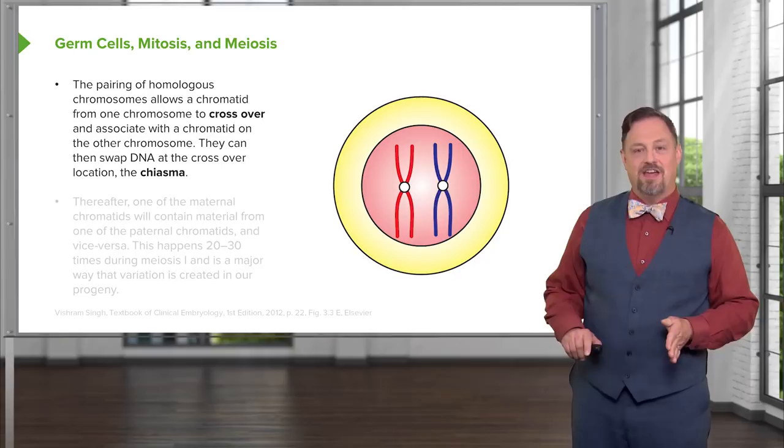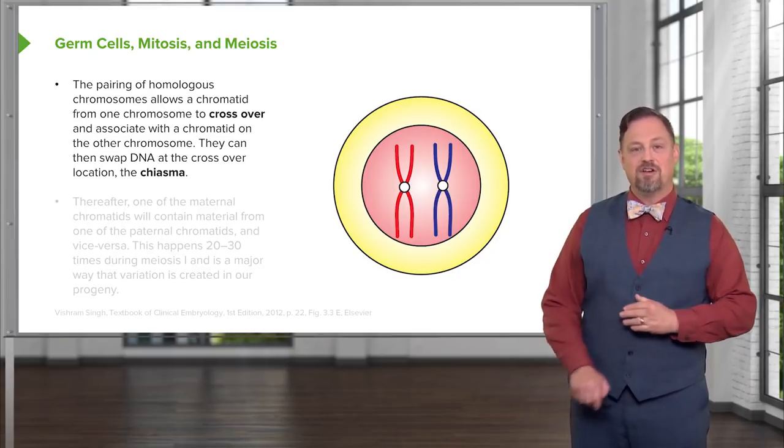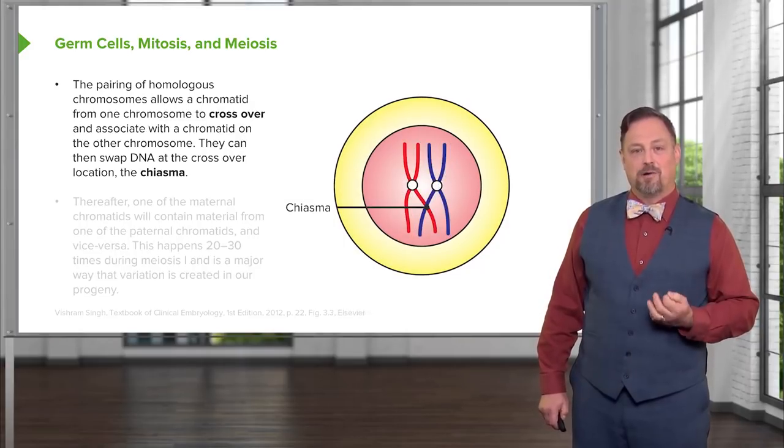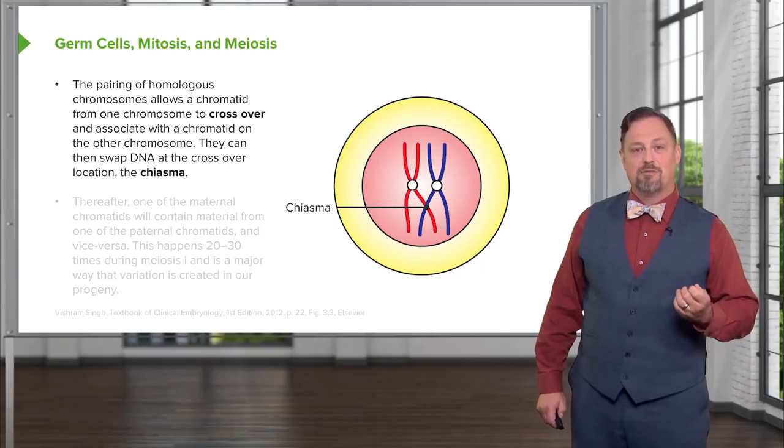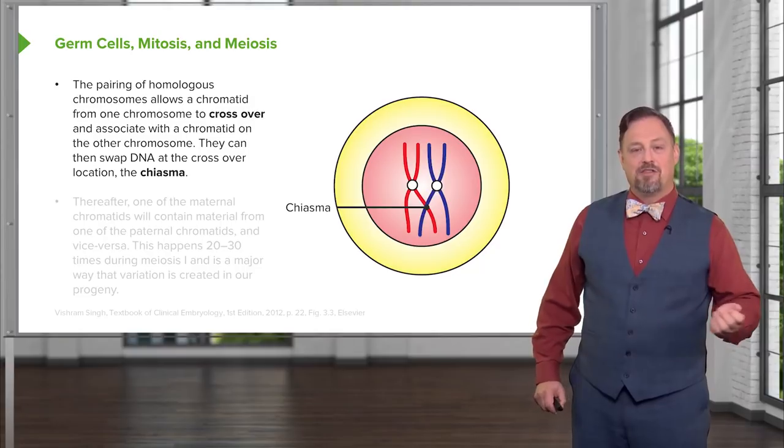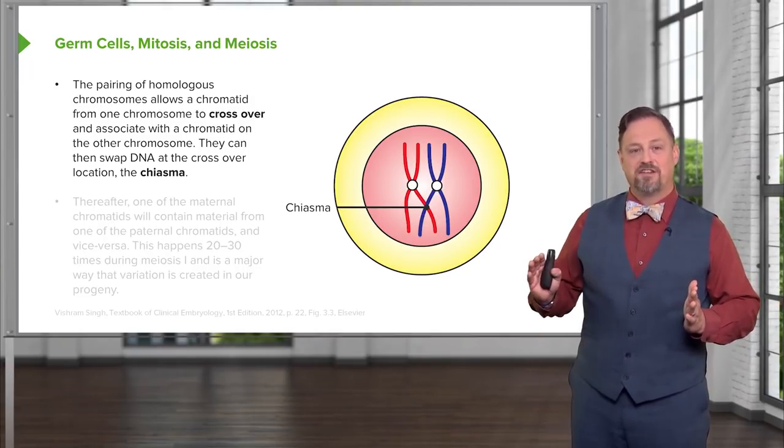What happens next is that the genetic material of one chromosome will cross over with the same region of its neighboring chromosome. This forms an X called a chiasma and at that point the genetic material from one chromosome or the other switches and we wind up with the chromosome on one side with a portion of its neighbor and vice versa.